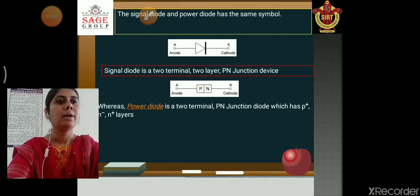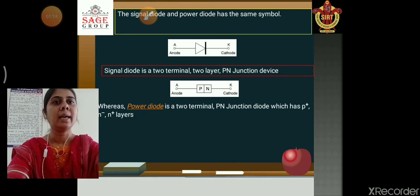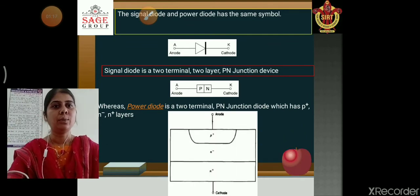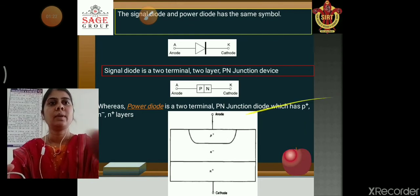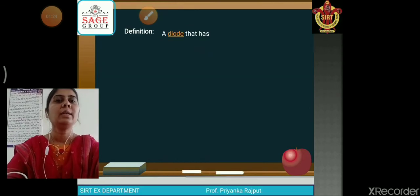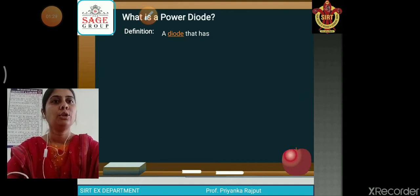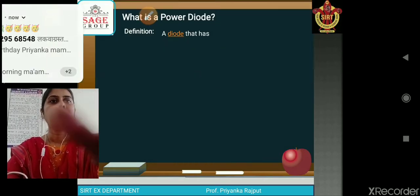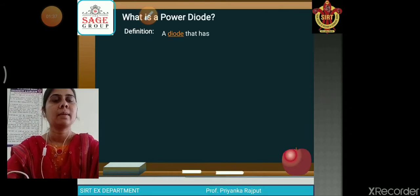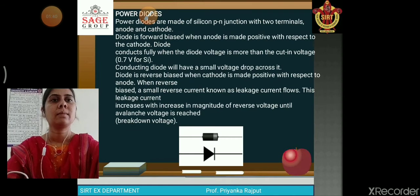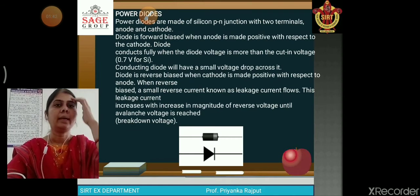Whereas a power diode is a two-terminal P-N junction diode which has P+, N-, and N+ layers — anode, cathode, P+, N+, and N-. So a power diode has two terminals, anode and cathode, and three layers.